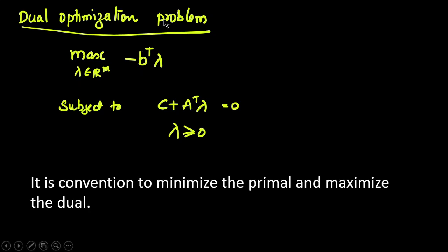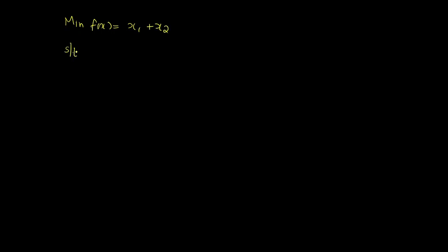Now we look at an example. If a linear programming problem is given, we have to check whether it is a convex problem or not. A minimization problem can be convex or non-convex. Consider the objective function: minimize f(x) = x1 + x2, subject to several constraints.